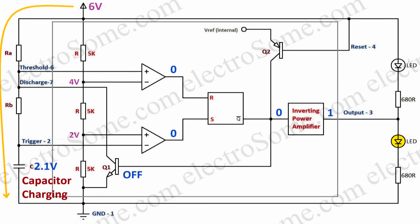When the capacitor voltage becomes greater than 2 volts, the output of the lower comparator becomes 0. Since both inputs of the SR flip-flop are 0, there will not be any change in the output.